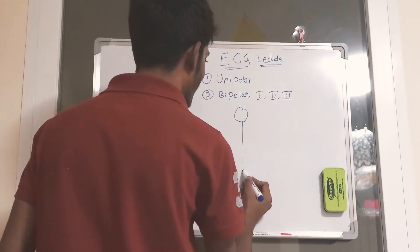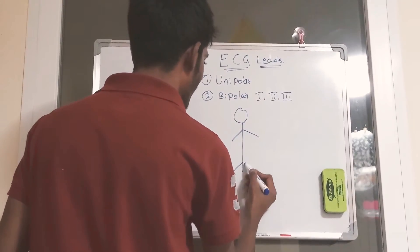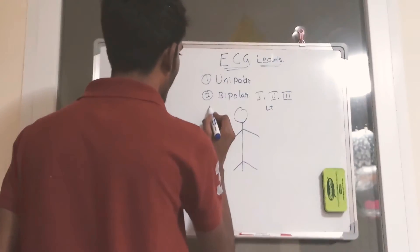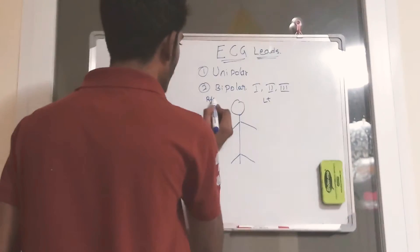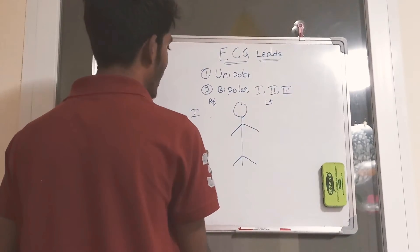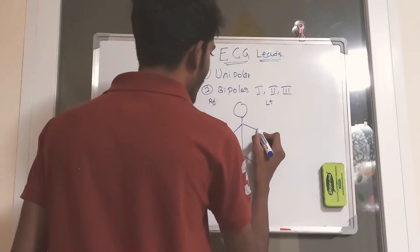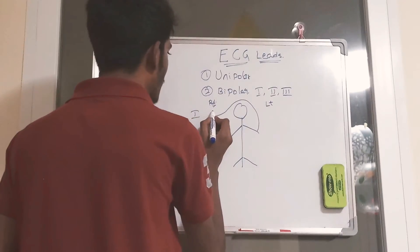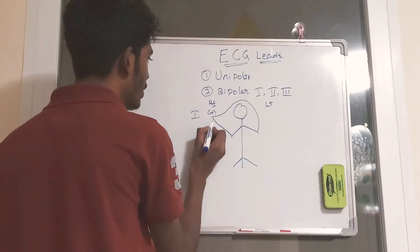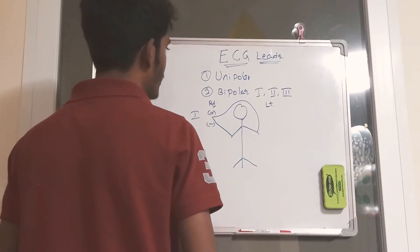First, let's consider this is a human and this is the left side, this is the right side. Lead 1 is obtained by connecting the left arm to a positive electrode and right arm to a negative electrode.